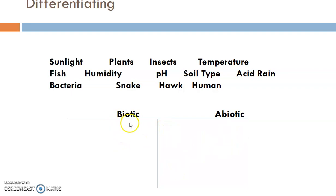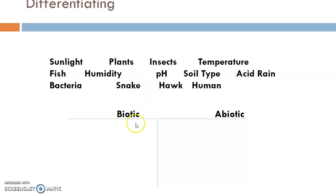In your notes you're going to fill out your T-chart with all the things that are considered living versus non-living. Sunlight is not made of cells, so sunlight would be under your abiotic category. Plants are made of cells, they grow, so plants would be biotic. Insects are living, so they would also be biotic. Temperature is a non-living factor, so it's considered abiotic. Fish is considered biotic.